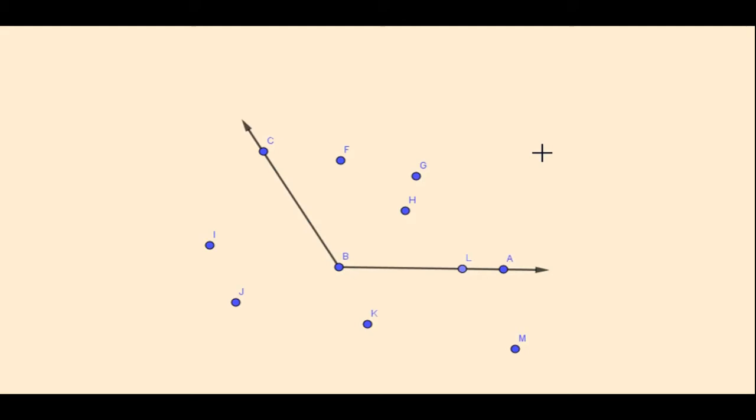So now we are going to see interior and exterior of an angle. Here is the angle. We can see point F, point G, point H are in the interior of the angle. Point C, point B, point L, point A, point J, point M are in the exterior.